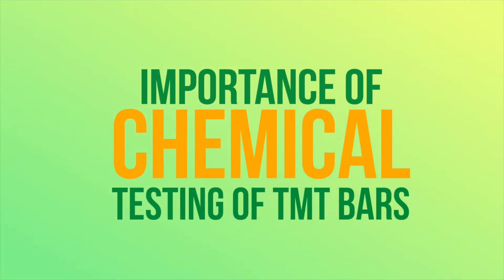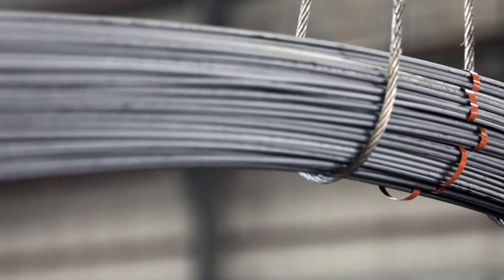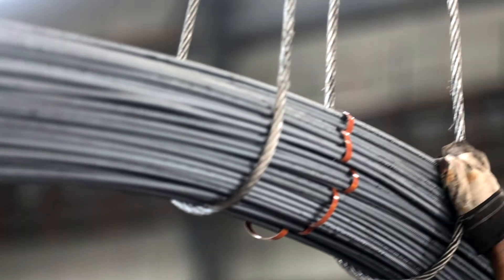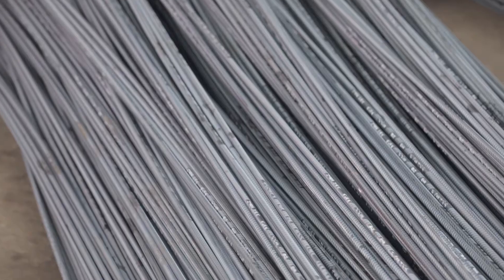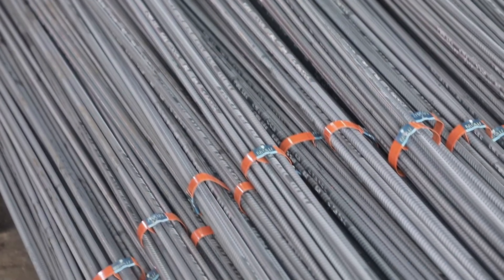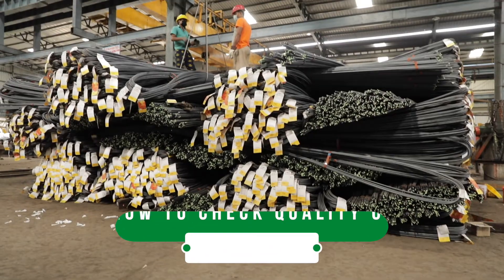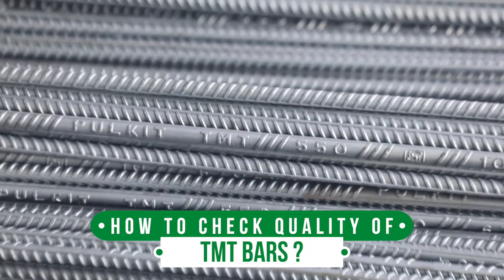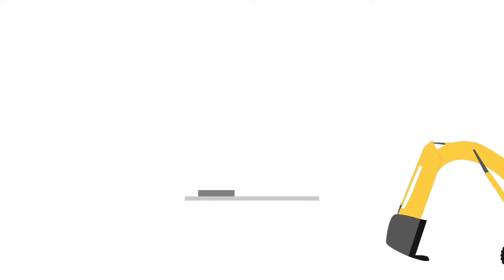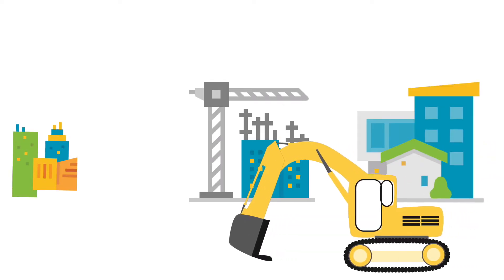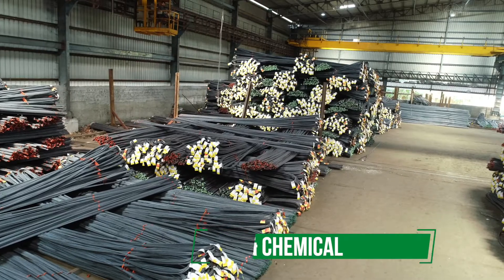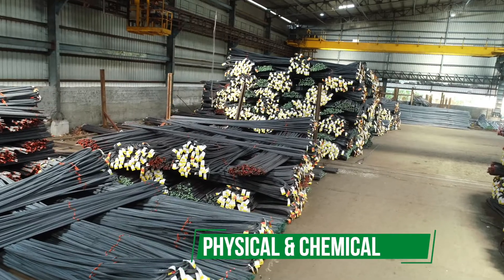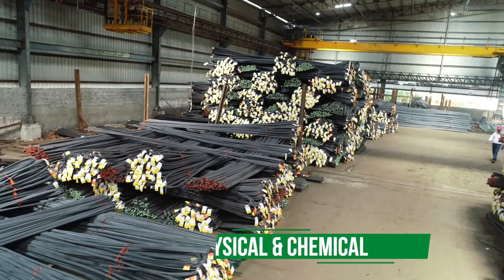TMT bars are the backbone of your building. They are available in various grades according to the requisite of your project. But how do we check the quality of TMT bars? The quality of TMT bars is dependent on two basic properties: physical and chemical. Here are some simple methods to check the chemical properties of TMT bars.